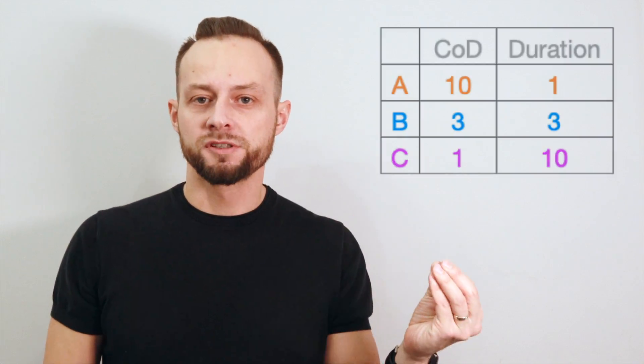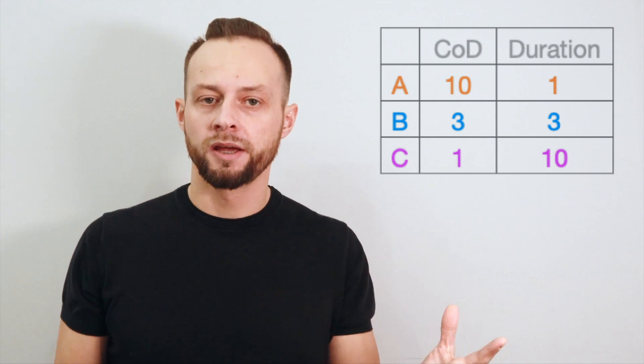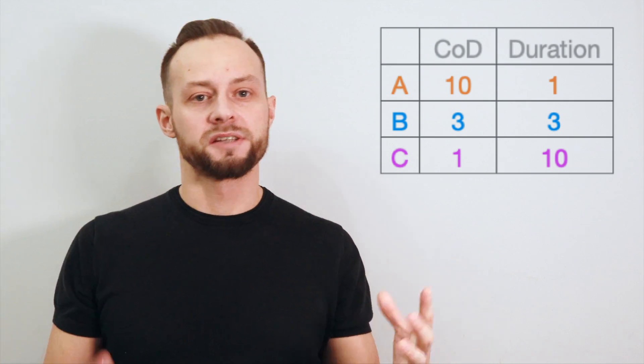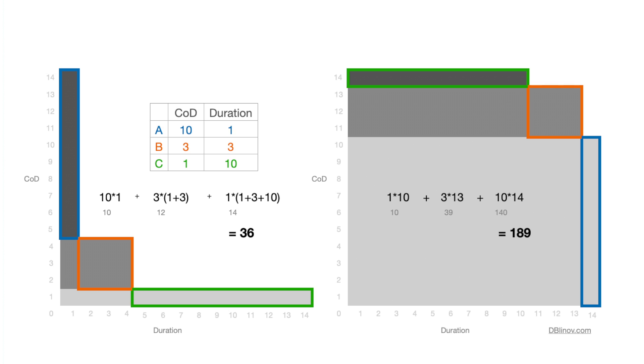Let's take three different jobs: A costs 10 points and lasts one period; B costs three points and lasts three periods; C costs one point and lasts ten periods. Considering two opposite sequences — ABC and CBA — the areas shaded in gray show the CoD in each case. The first sequence results in 36 points of cost, and the second costs as much as 189. So doing the weighted shortest job first delivers the best economic benefits.